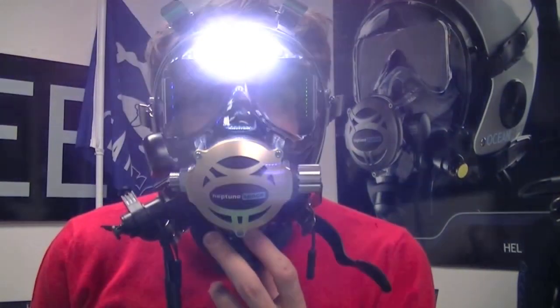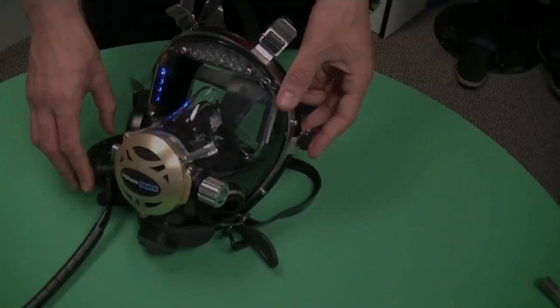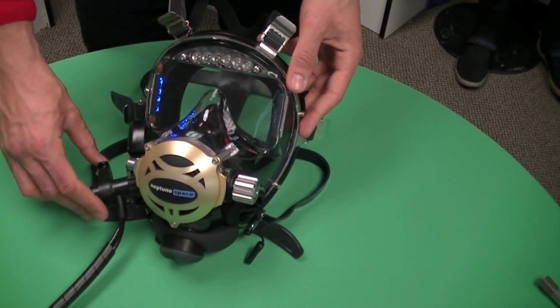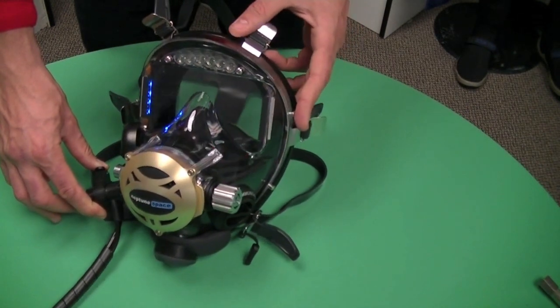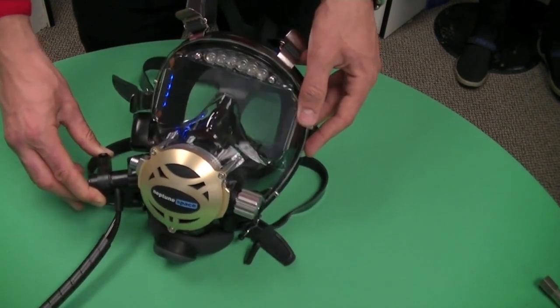You can turn on the visor light by pressing the outer button. The inside button can be used as a dimmer for the display. Blue LEDs will show your depth and green will show the pressure inside of your tank.